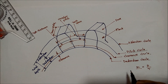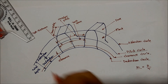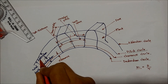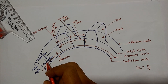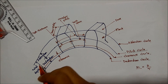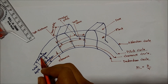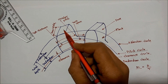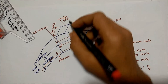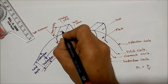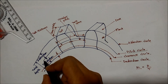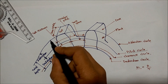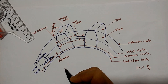Addendum: it is the radial distance of the tooth from the pitch circle to the top of the tooth. From the pitch circle — this is the pitch circle — to the top of the tooth. This is the top of the tooth.